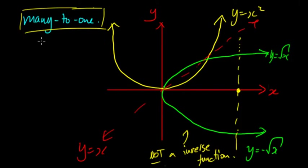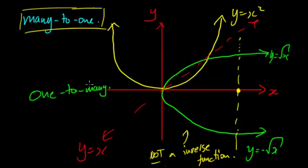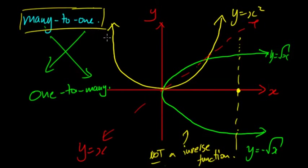When you have many-to-one, swapping x and y gives you one-to-many — one x value to many y values. Because of this, to get an inverse function you have to restrict a many-to-one function to a one-to-one function. A one-to-one function will always give you an inverse that is also a function. However, if you have a many-to-one function like this parabola, you must restrict it first, otherwise the inverse will be an inverse relation but not an inverse function.